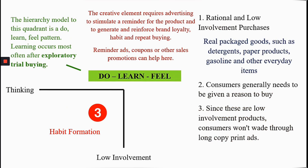The third quadrant is thinking versus low involvement. Purchases here require low involvement of information but are very rational in nature. The consumer generally needs a reason to buy a particular product, so in your communication you have to explain the reason why the consumer should buy that particular brand. Products such as packaged goods, detergents, paper products, gasoline, and everyday household items fall under this category.